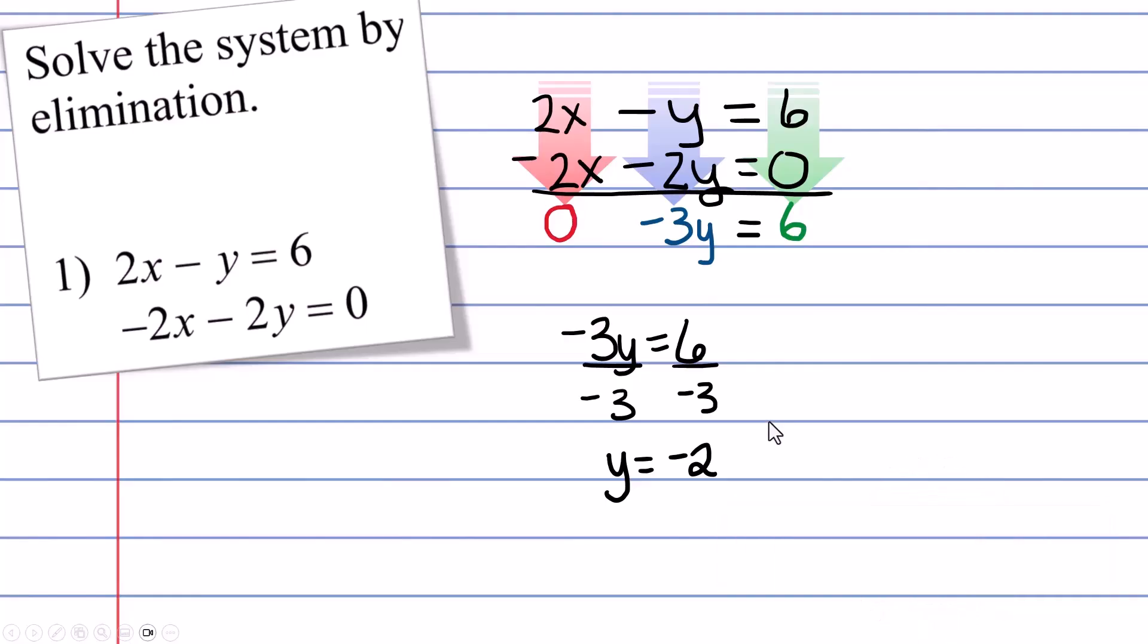Now remember, you have two answers here. We actually have a system of equations and if you saw the graphing video, you think of these two lines on a graph, there's an intersection point. That intersection point has an x and a y. You only have half of the solution with the y. You now have to find the x.